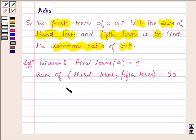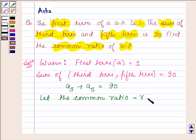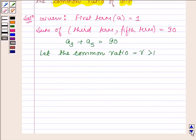So let the third term be denoted by a3 plus a5 equals 90 and now let the common ratio equal r which is greater than 1. So the third term will be ar² and the fifth term will be a times r raised to the power 4.